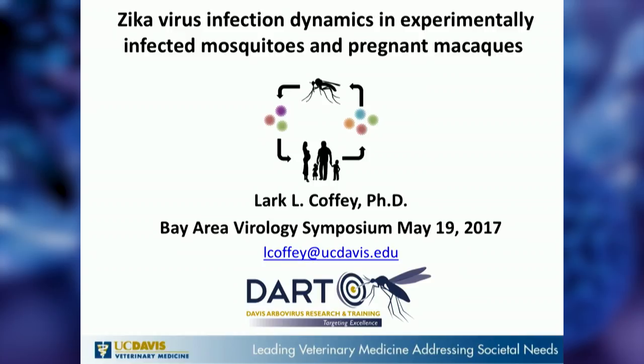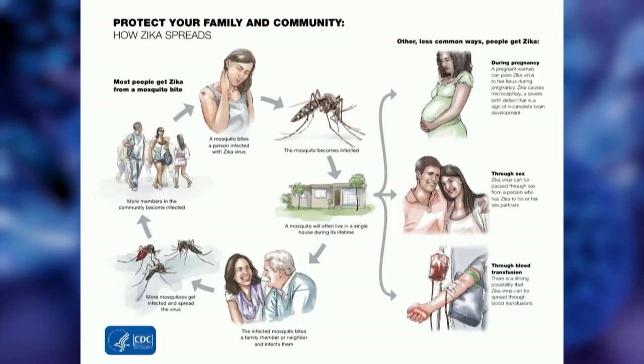Thank you for the invitation to be here today. Zika is an emerging mosquito-borne virus that in its urban cycle is transmitted between Aedes species mosquitoes and humans. Aedes can live in close contact with us — they preferentially feed on human blood, can live in our homes, and lay their eggs in standing water outside. There are also other less common transmission routes: vertically from mother to child during pregnancy, through sexual contact,